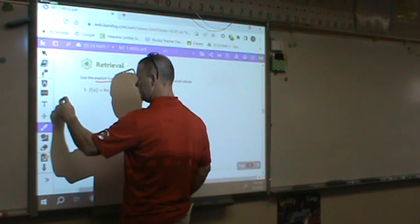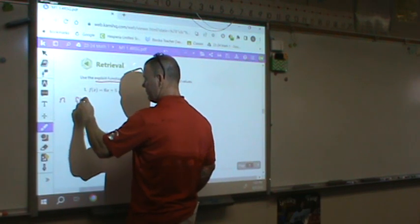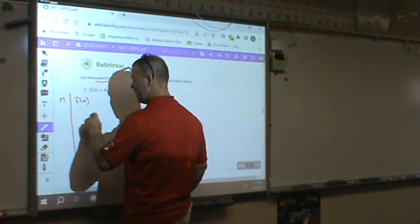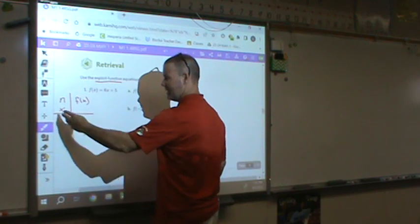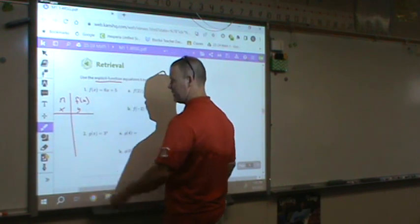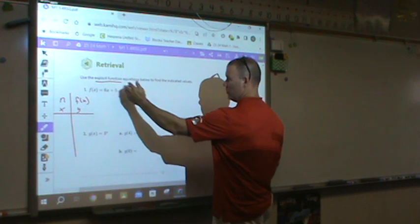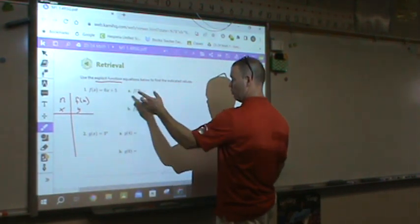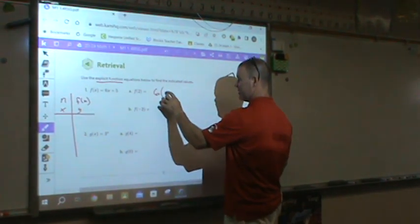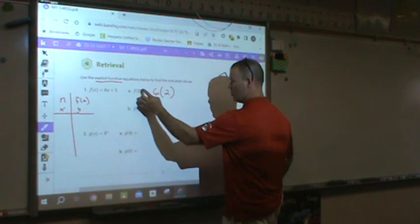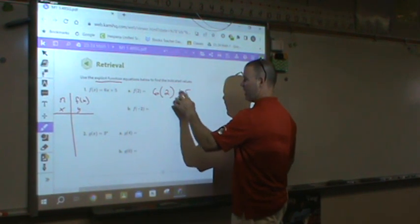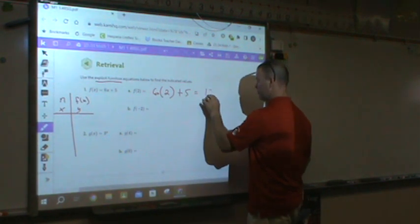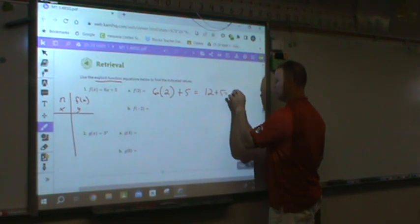Remember the difference between n and f of n. When we look at a table, n is like x, that's an input. f of n is like y, it's an output. So for f of 2, what's my output? Well, it's really simple. 6 times 2, replace the 2 with your x, plus 5. 6 times 2 is 12, plus 5 is equal to 17.